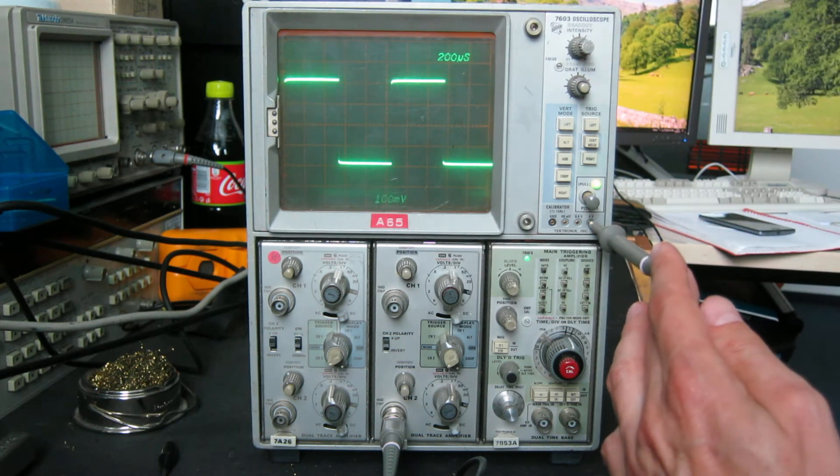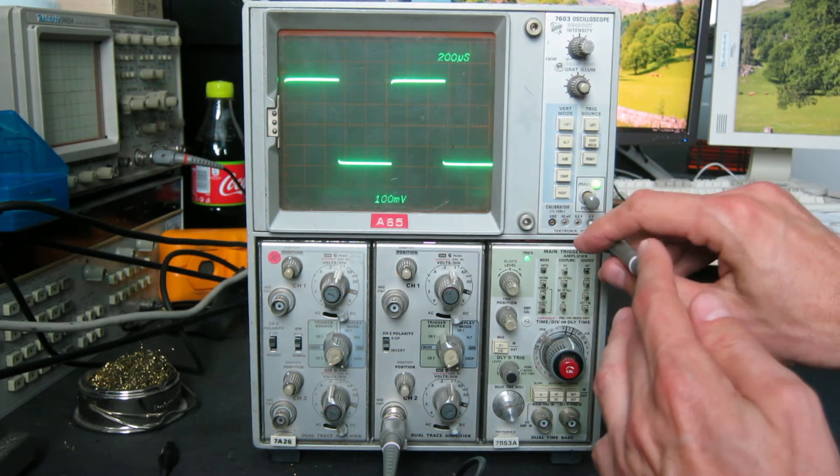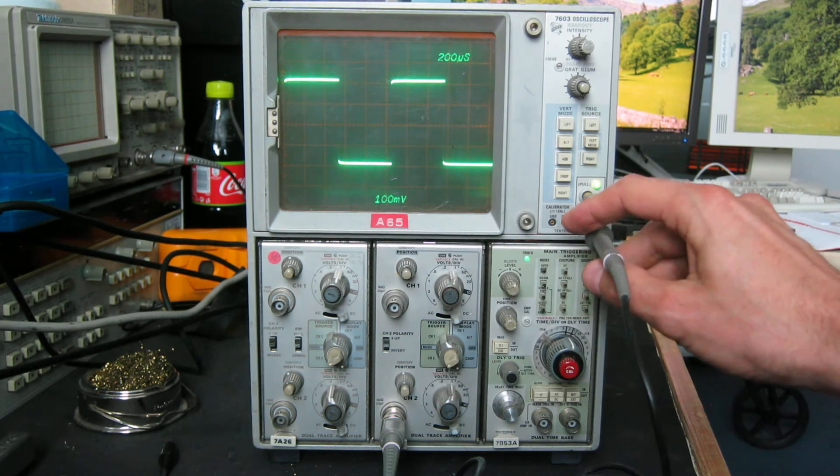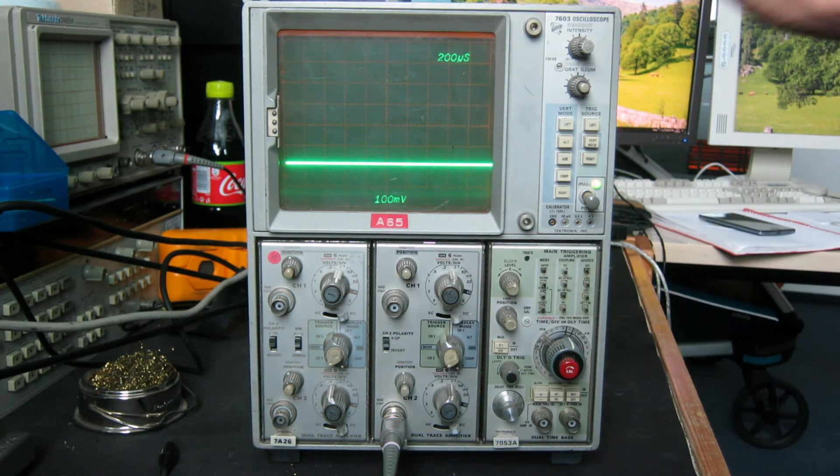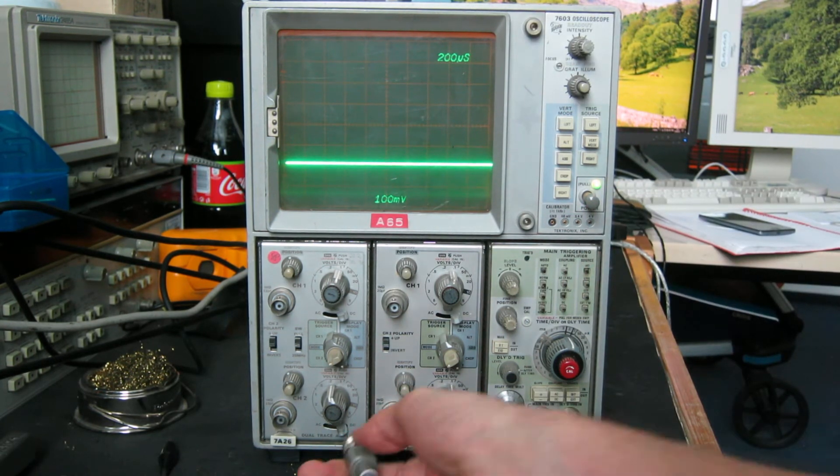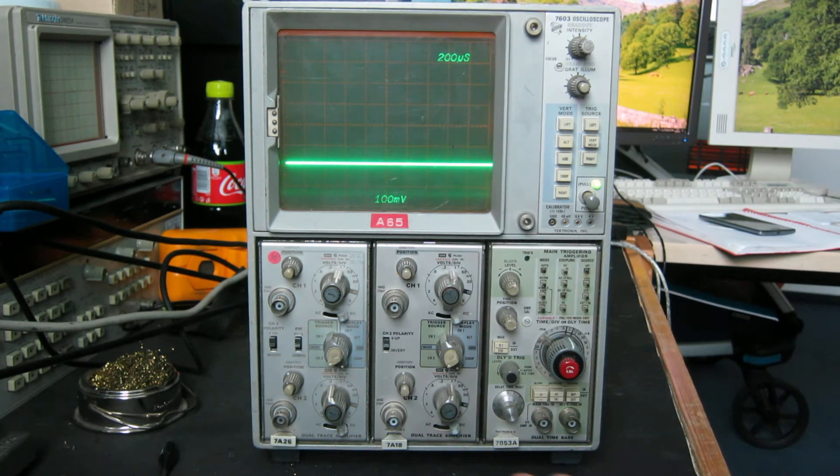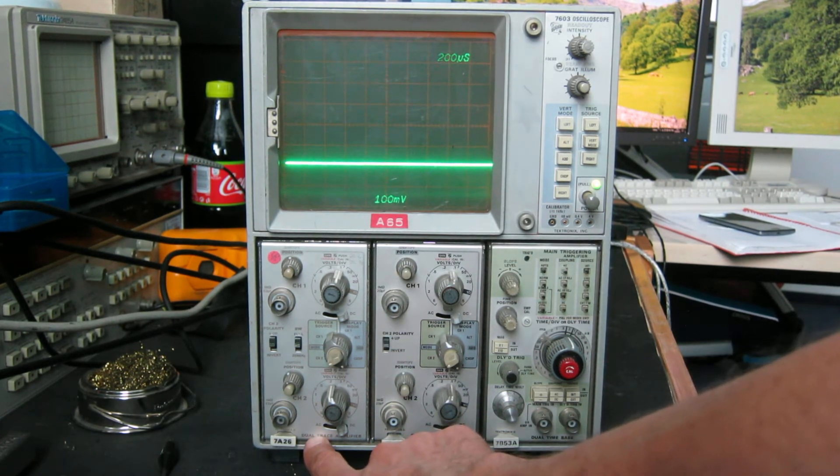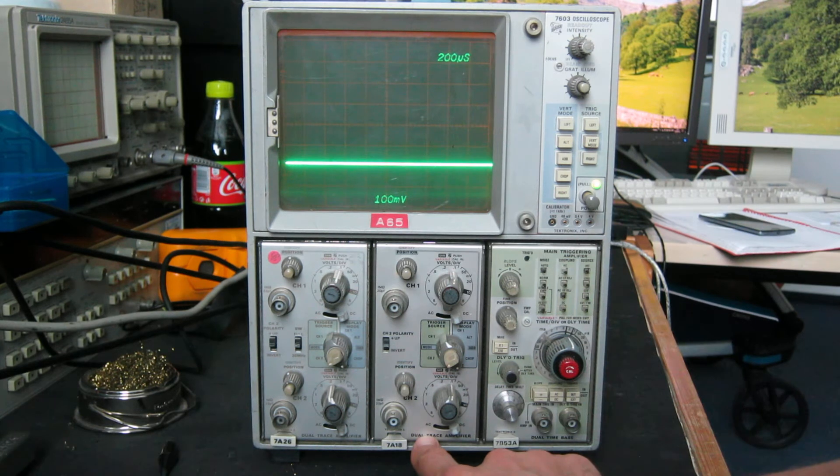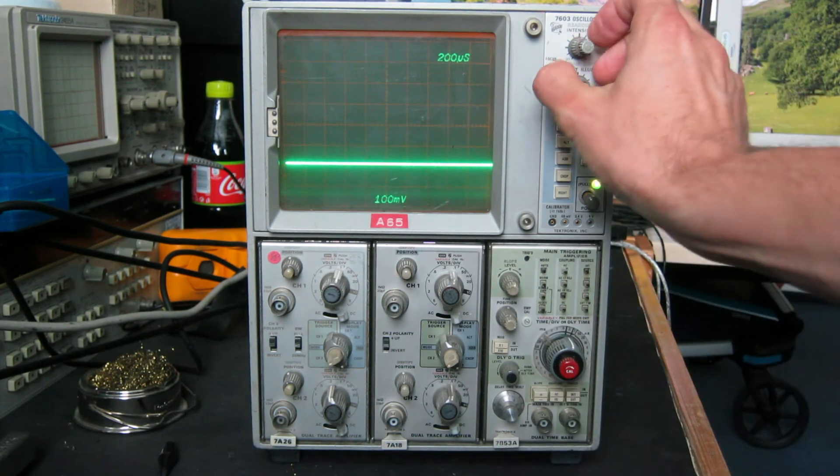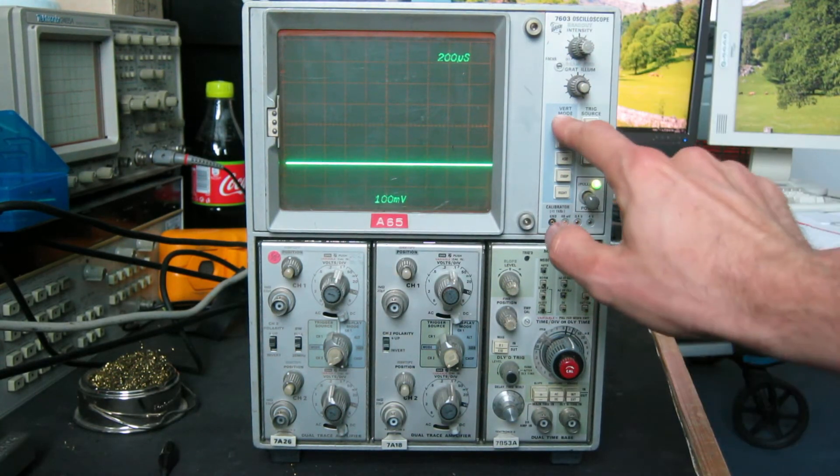So that's basically all four channels working. Now I'd like to demonstrate the rise time of the two different plug-ins, because this scope, I think it's nominally rated at 100 MHz, but the two plug-ins are a bit different. This 7A26 is a bit faster than the 7A18, so we'll start demonstrating the 7A26.